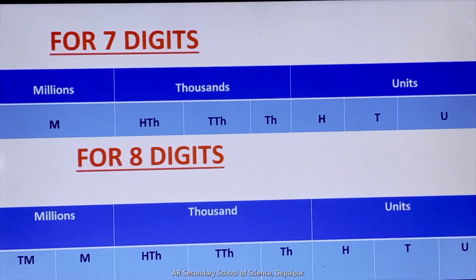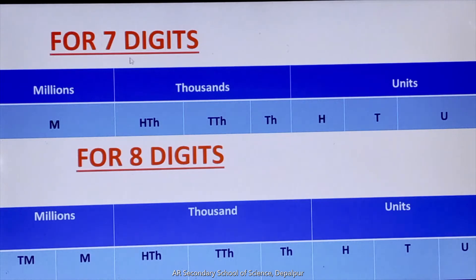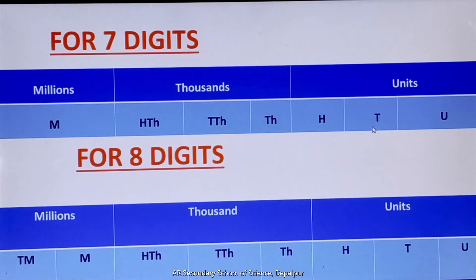Now we will work with different place value charts for different places. Sabse pehle hum place value chart ko draw karna seekhenge, numbers ko words mein convert karne ke liye. Place value chart ke baare mein jaanna zaroori hai. Place value chart ko draw karne se hum amount ko sahi se read and write kar sakte hain. Sabse pehle hum 7 digits ke place value chart ko dekhenge. See the place value chart for 7 digits: Unit, Tens, Hundred, Thousand, Ten Thousand, Hundred Thousand, and Million. Unit, Tens, Hundred ke period ko kya bolte hain? Units period. Thousand, Ten Thousand, Hundred Thousand ke period ko kya kehte hain? Thousands period. Million ke period ko kya kehte hain? Millions period.